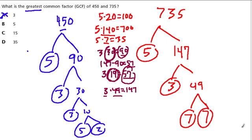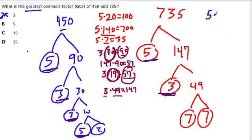The greatest common factor is going to be a combination of the prime factors they have in common. Let's look at the number 5 — 5 goes into both numbers. In 450 we have two 5s, but in 735 we don't, so only one 5 is common to both. What about 3s? In 450 I see two 3s, in 735 I see one 3. Since 3 times 3 doesn't go into 735 — only one 3 does — the greatest one they share is one 3. So far, 5 times 3 is common to both numbers.